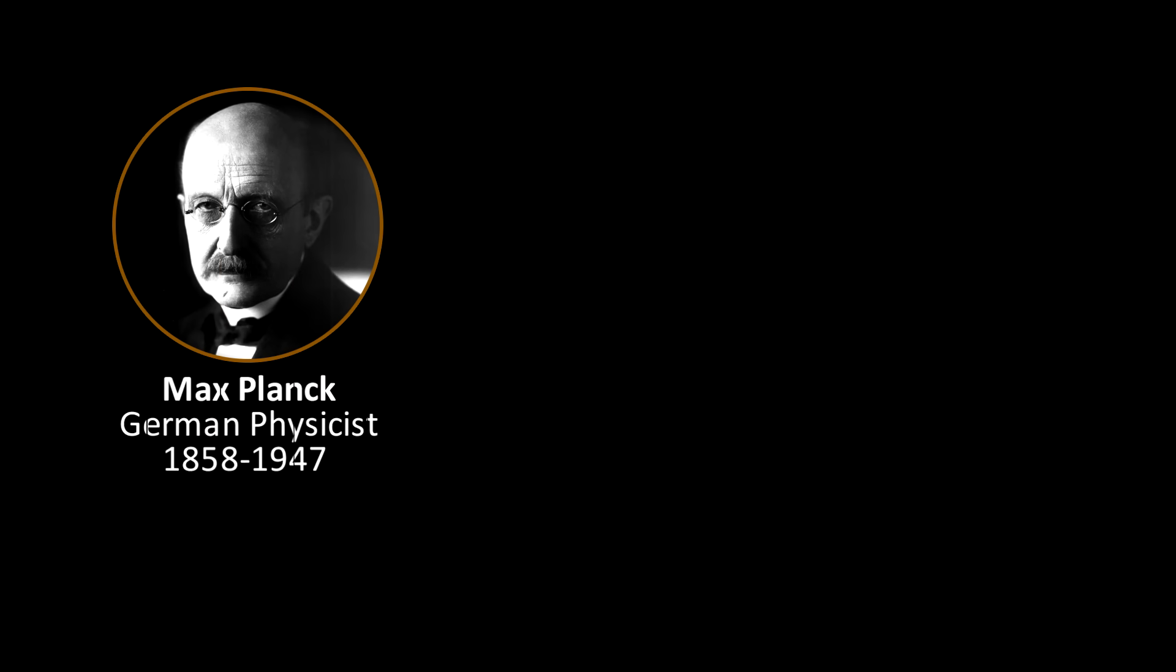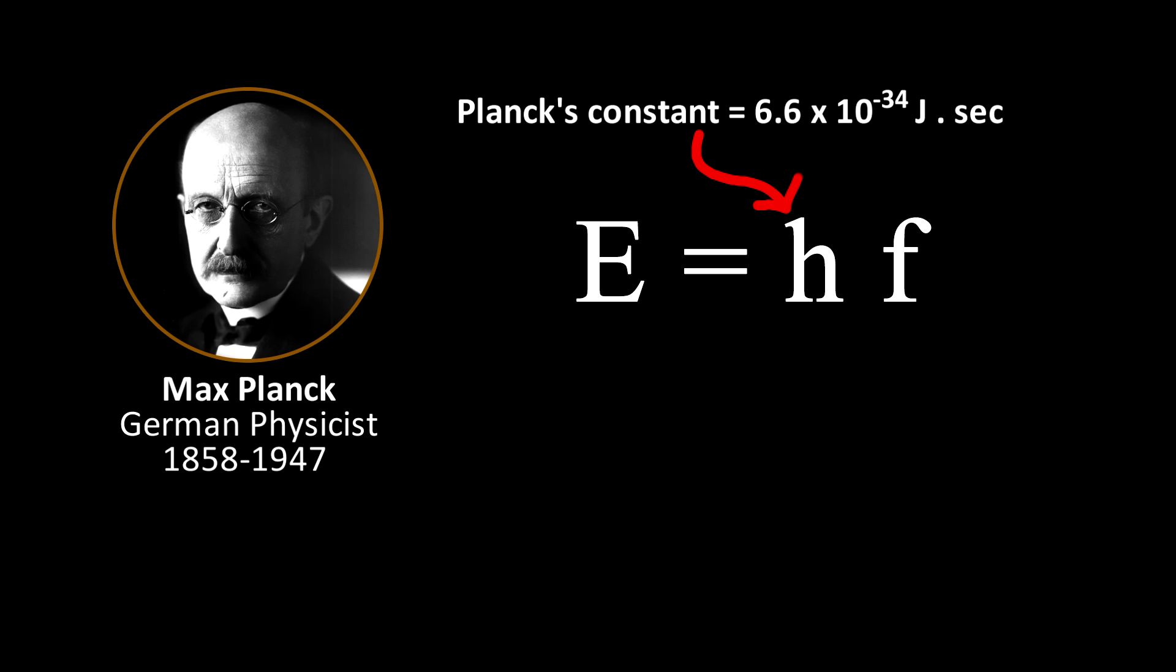But little did Rutherford realize that 11 years earlier, in 1900, Max Planck had already made this step by showing that energy of photons was quantized. Planck's theory had shown that matter emitted only discrete amounts of radiation, with energy e proportional to the frequency f, the proportionality constant h being Planck's constant.